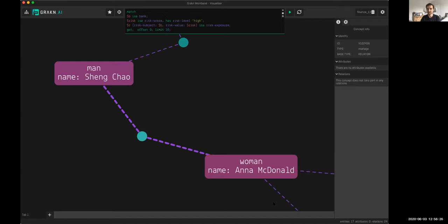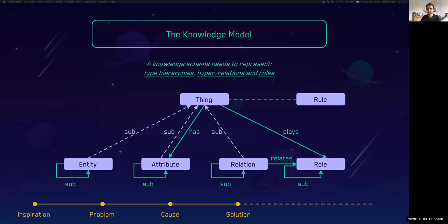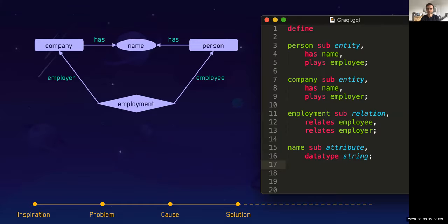To continue on the slides, because this will answer some possibly follow up questions. If we look at the actual model on how we model this domain—to start off with a very simple basic model, what you see on the right is the modeling language, which is also in Grakel here. We're defining the person, company, employment and name. A person is an entity and we define that by saying person sub entity.